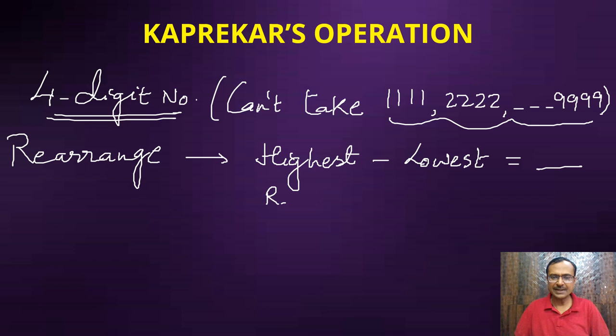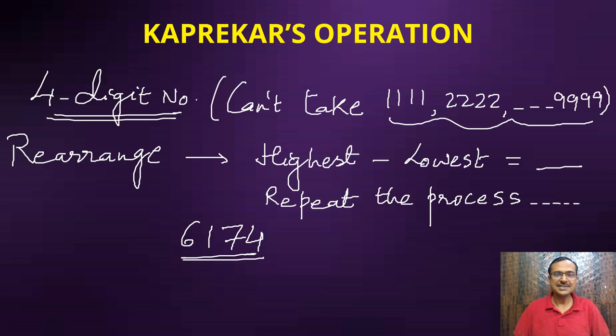Subtract the two, you get another number, and then repeat this process. Whatever number you get, repeat the process. So again rearrange them to get the highest and the lowest and then subtract. Repeat this process over and over again. You are bound to reach the number 6174. This is an inevitable part of this operation sequence and Kaprekar brought out this sequence, and that is why this operation is known as Kaprekar's operation.